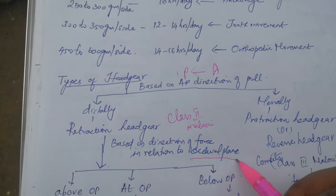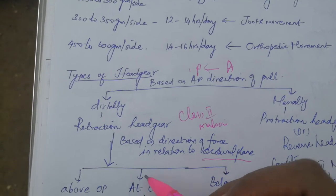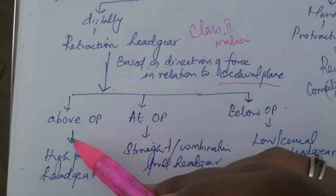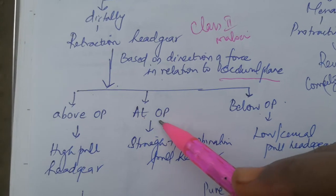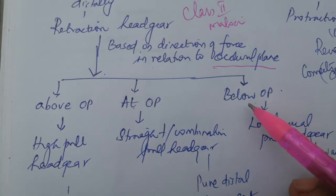Whether this force is exerted at the level of occlusal plane, above the occlusal plane, or below the occlusal plane. If above, we call it high pull headgear. At the level, it's straight or combination pull headgear. Below the level, we call it low or cervical pull headgear.